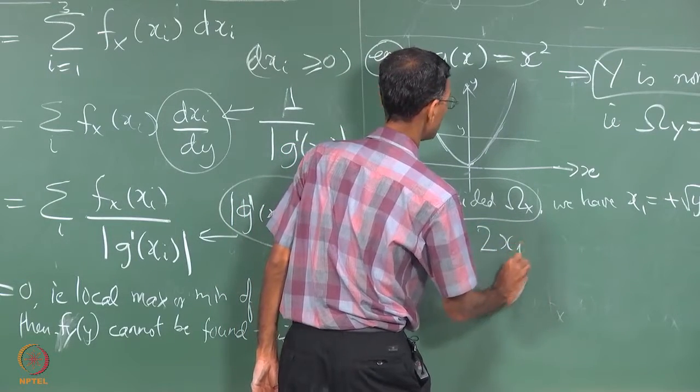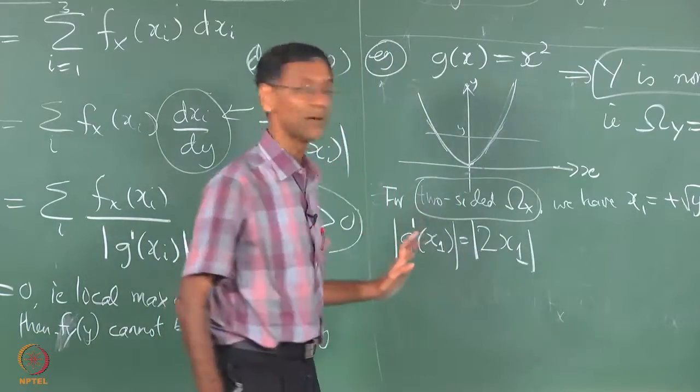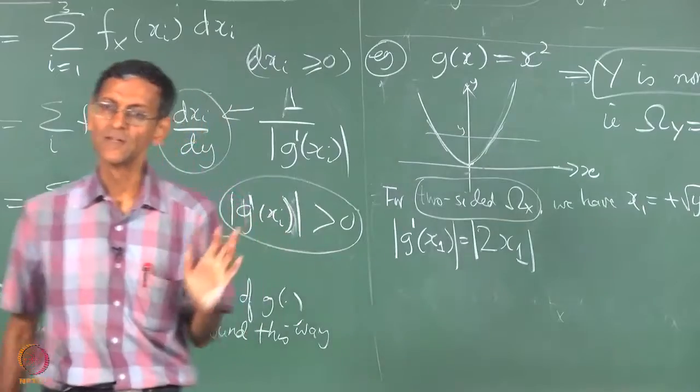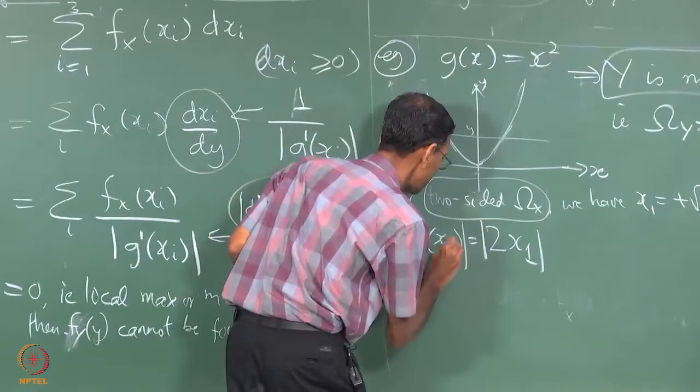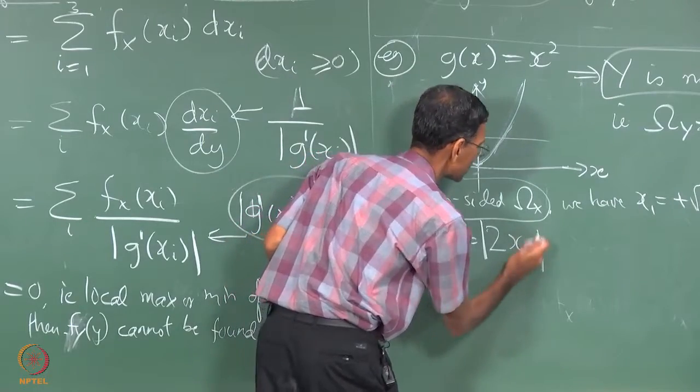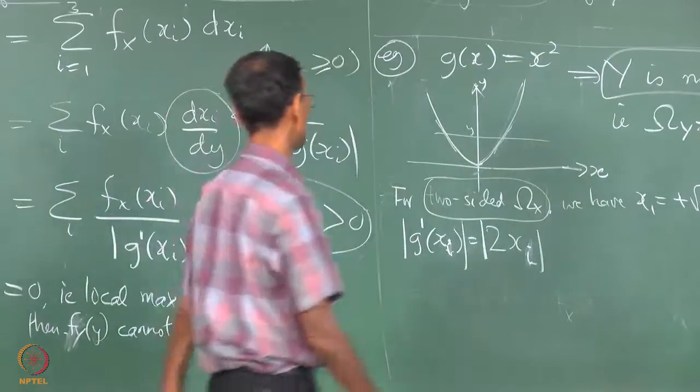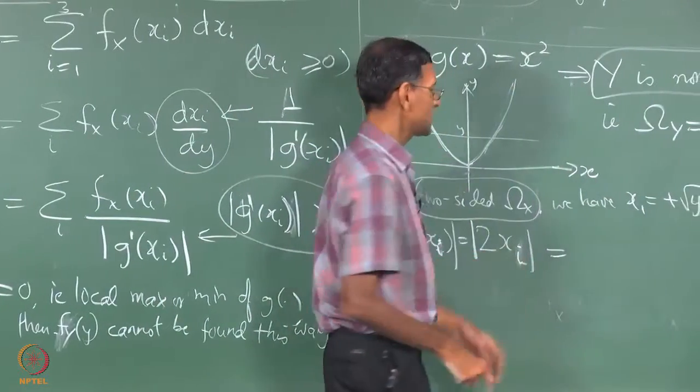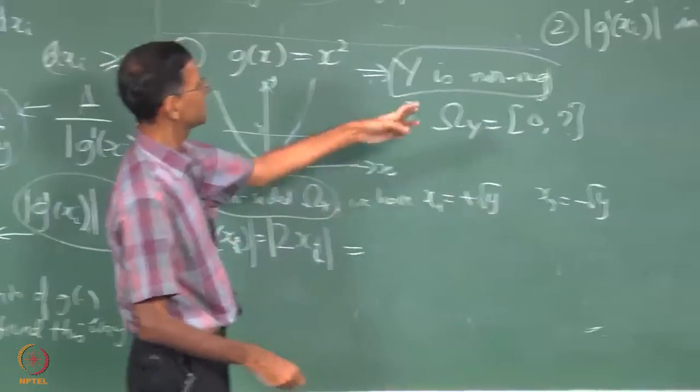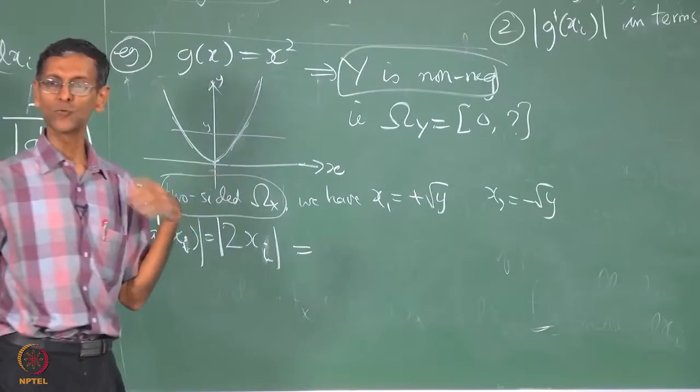So g'(X_1) is mod of that, we are only interested in mod of that is what, 2 X_1 magnitude. Be very clear about it, X_1 can be positive or negative. I can put i, g'(X_i) is magnitude of 2 X_i which is, magnitude of X_i is just root y. Root y remember is always a positive root of y.